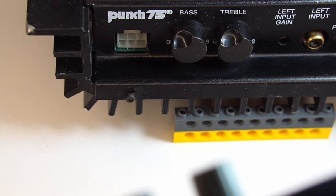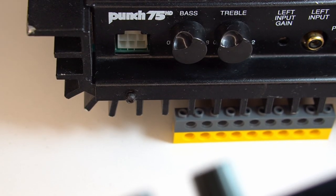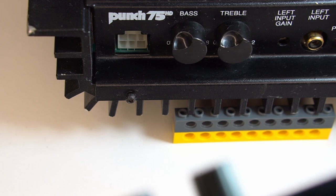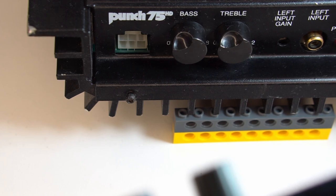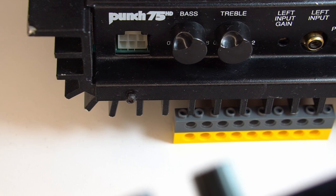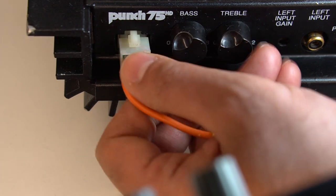As mentioned earlier, Minifit Junior connectors have been around for a long time. Here's a 6-way connector for speakers on a Rockford Fosgate car amp, which is still in serviceable condition after decades of operation. The crimped cable and connector are still functioning after all these years.